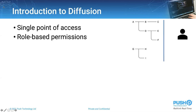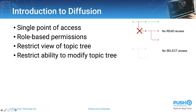Within Diffusion, there are different levels of permissions. Users must be given select access to even know about the data — to know it exists — otherwise it's hidden. They must be given read access to subscribe, write access to publish to it, and update access to change the structure. This sample topic tree shows how data can be granted in green, read access removed in red, and data hidden entirely from clients because they have no select access.